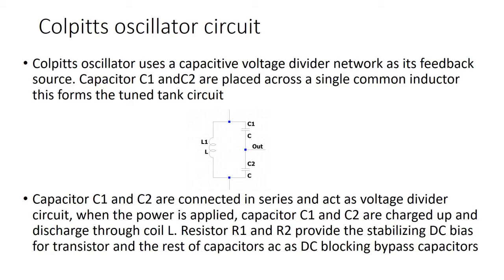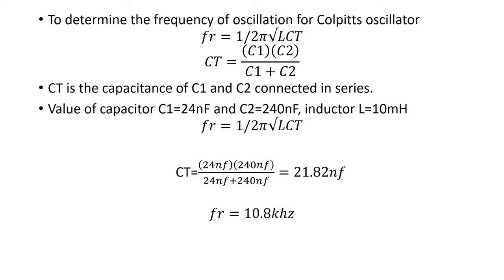The oscillations across the capacitors are applied to the base-emitter junction. Resistors R1 and R2 provide the stabilizing DC bias for the transistor in the normal manner. The remaining capacitor acts as a DC blocking bypass capacitor, and to obtain high reactance during the frequency of oscillation, a radio frequency choke is used.